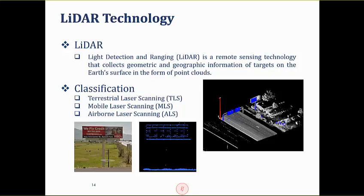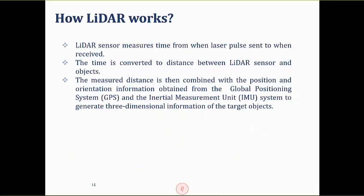In terms of platforms, LIDAR scanning can be done terrestrially, from a mobile vehicle, or from an airborne plane. How does LIDAR work? The scanner shoots a laser beam, the object reflects it back, and the time difference between transmission and return — multiplied by the speed of light and divided by two — gives the exact distance from the scanner to that point. If we know the position of our LIDAR scanner via GPS and IMU, we can determine the 3D location of any target object.